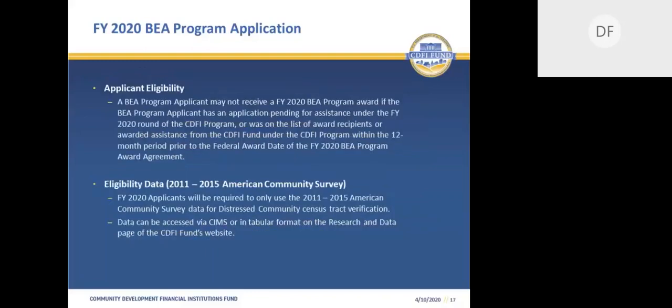Applicants should be aware that they will not be considered for a Fiscal Year 2020 BEA program award if they have an application pending for assistance under the Fiscal Year 2020 round of the CDFI program, or if they are on the list of award recipients or were awarded assistance from the CDFI Fund under the CDFI program within a 12-month period prior to the federal award date of the Fiscal Year 2020 BEA program award agreement. The BEA program eligibility data continues to be based on the 2011 to 2015 Census Bureau's American Community Survey. For Fiscal Year 2020, the data has been updated to reflect BEA program eligibility of U.S. territories and possessions. This data can be accessed via CIMS or via tabular data in Excel format posted on the research and data page of the CDFI Fund's website.